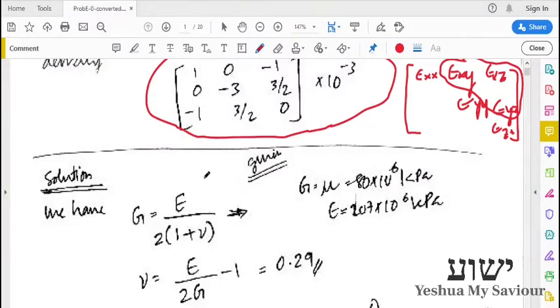The solution: we are given the modulus of rigidity, which is also represented as the second Lamé parameter, that is μ, which is 80 GPa.